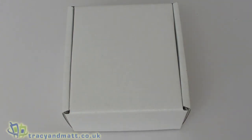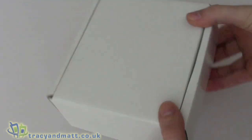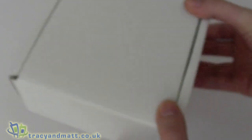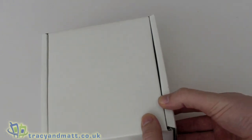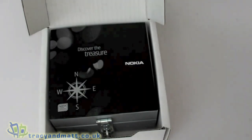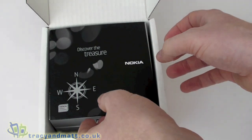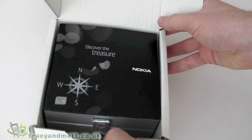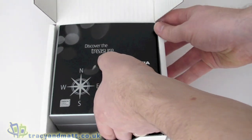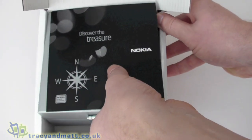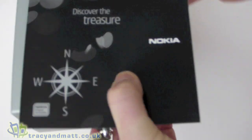Hi, this is Matt from tracyandmatt.co.uk and unboxings.com. Here I have a plain white box—I actually have a Nokia Bluetooth headset. This is the BH-804, which comes in this external white box, which led me to believe I was looking at a pre-release version. But when I look inside, I discover something quite interesting.